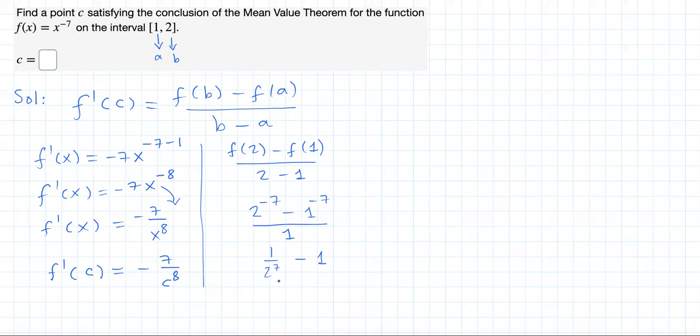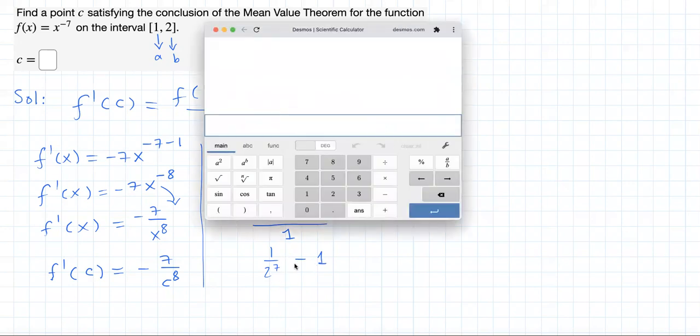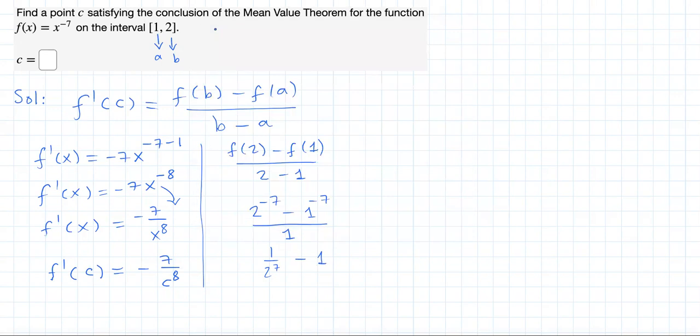2 to the 7, what is that? Using our calculator, 2^7 = 128.